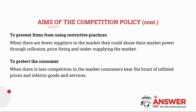The next aim of the competition policy is to prevent firms from using restrictive practices. When there are fewer suppliers in the market, they could abuse their market power through collusion — an arrangement between businesses to limit competition and increase profits. Price fixing occurs when suppliers manipulate and charge higher prices to increase profits. Firms can also decide to undersupply the market with the intention of increasing profits. Restrictive practices clearly compromise the consumer.